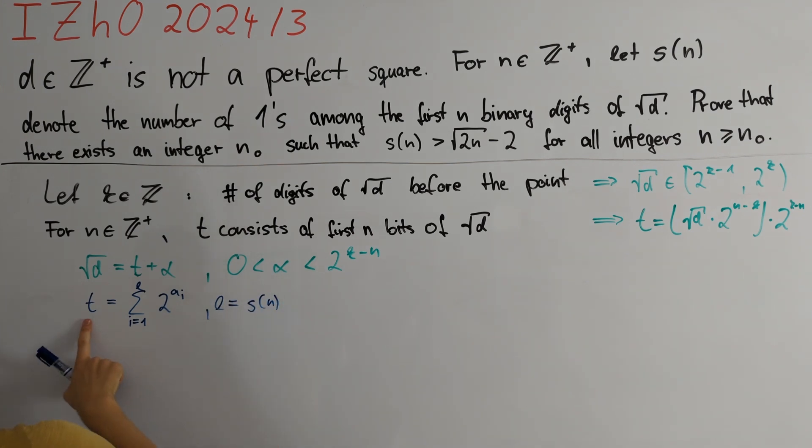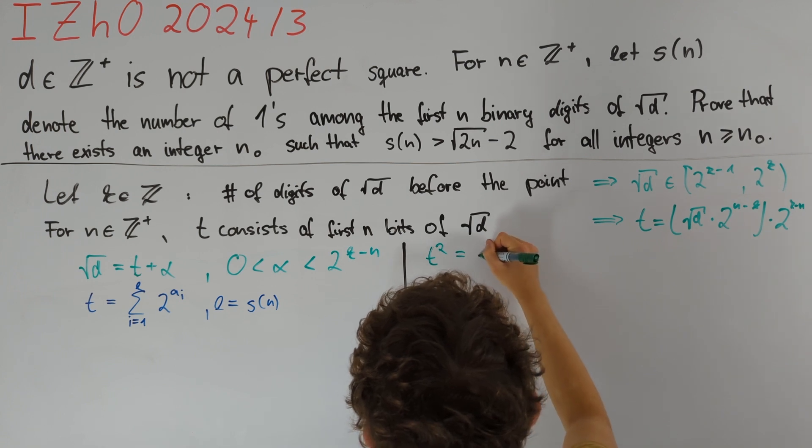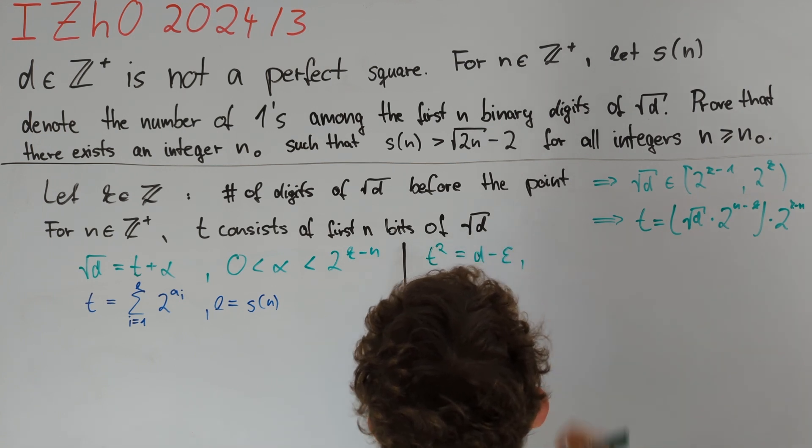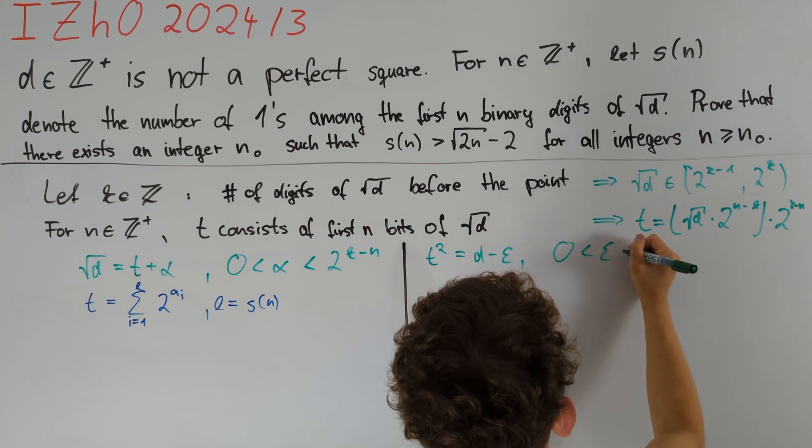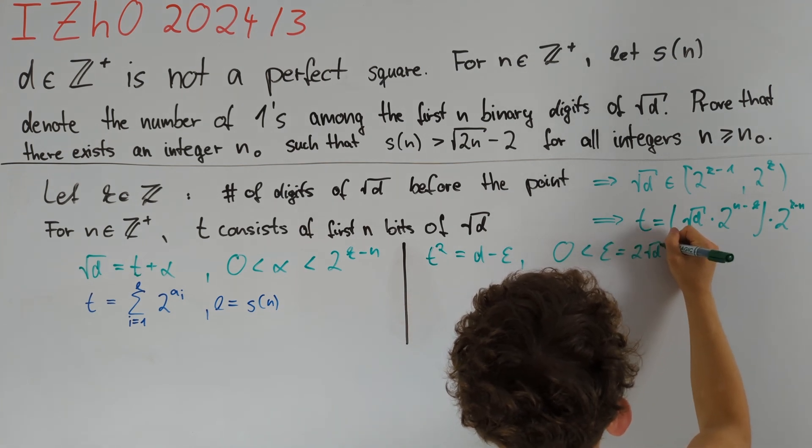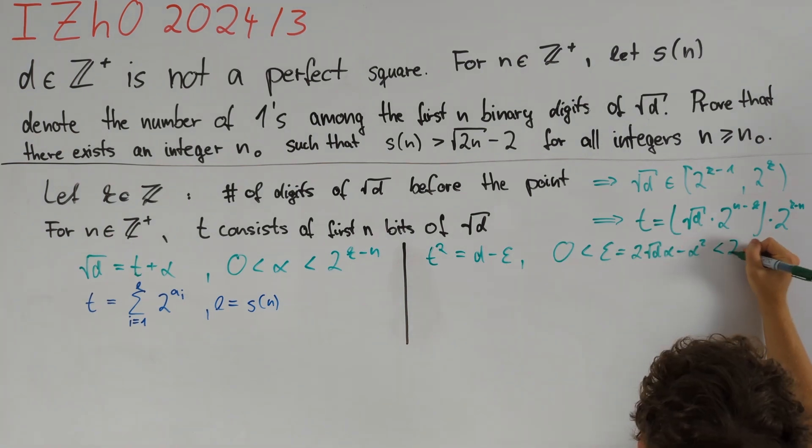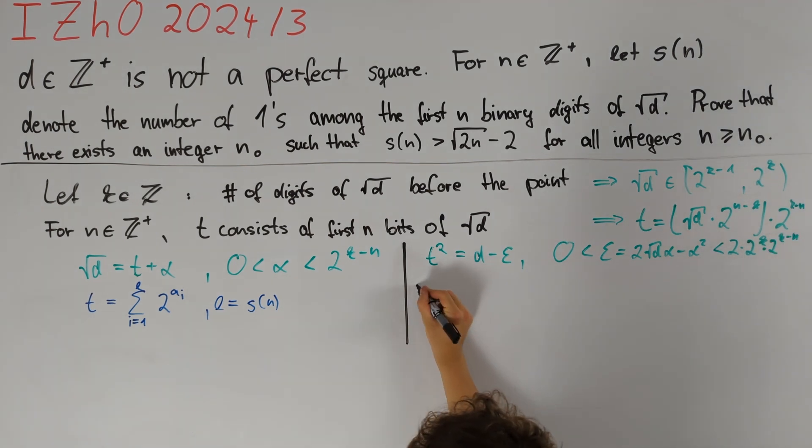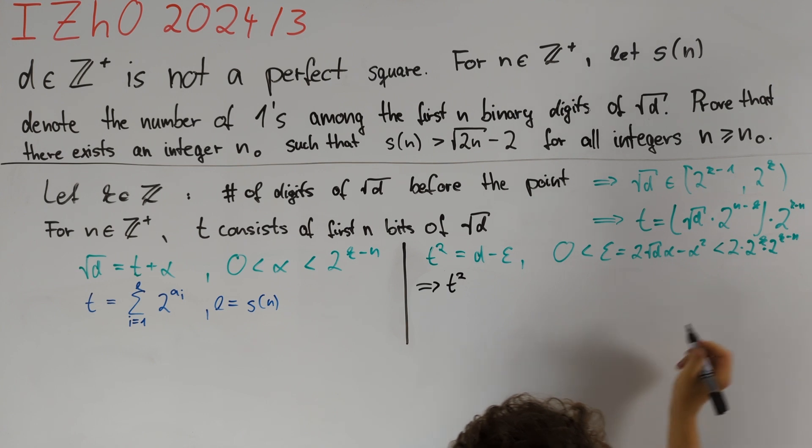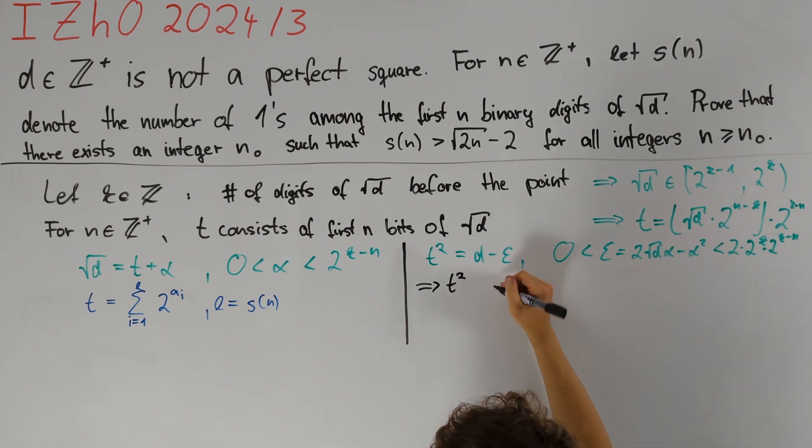The first line tells us that t squared is equal to d minus epsilon, where epsilon is positive and equal to 2 square root d alpha minus alpha squared, which is less than 2 times 2 to the power of k times 2 to the power of k minus n. Hence t squared has at least the negative of this exponent, which is n minus 2k minus 1 ones after the point.